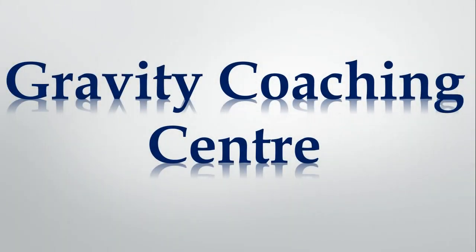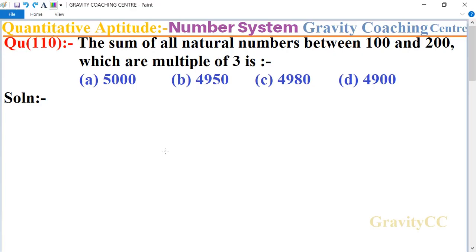Welcome to our channel Gravity Coaching Center, Quantitative Aptitude, chapter Number System, question number 110. The sum of all natural numbers between 100 and 200 which are multiples of three. In this question, first we write all the natural numbers between 100 and 200 which are divisible by 3.